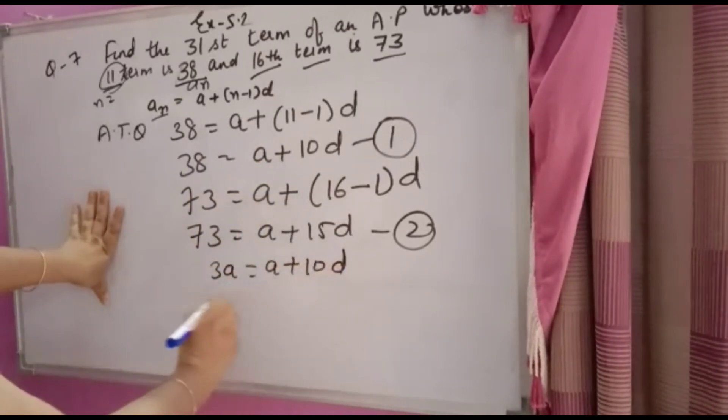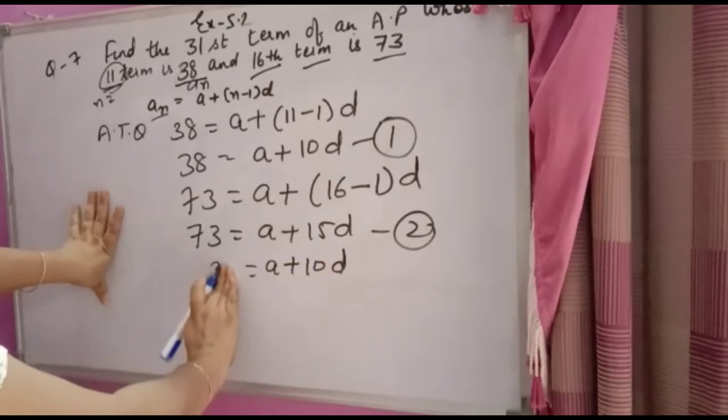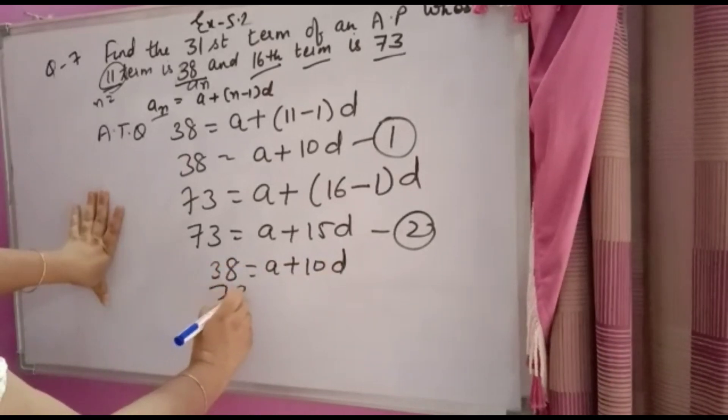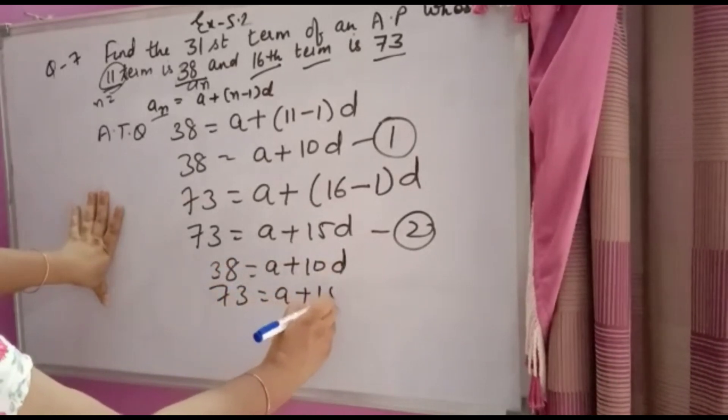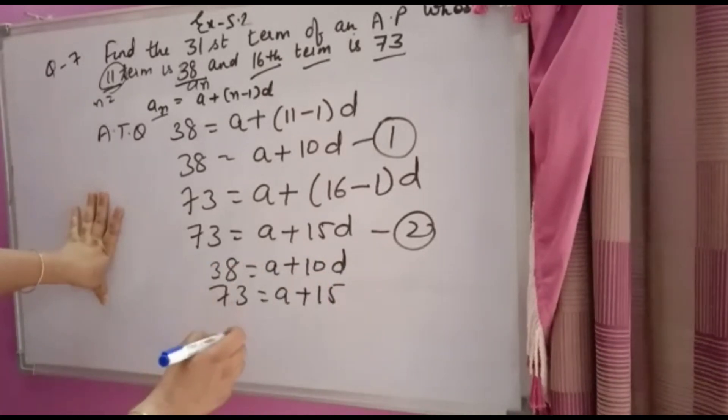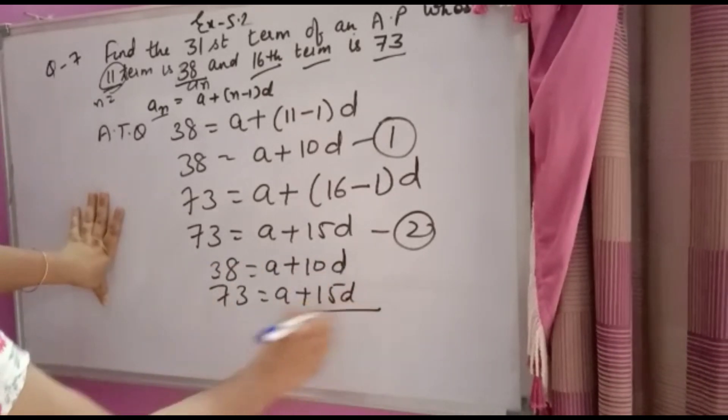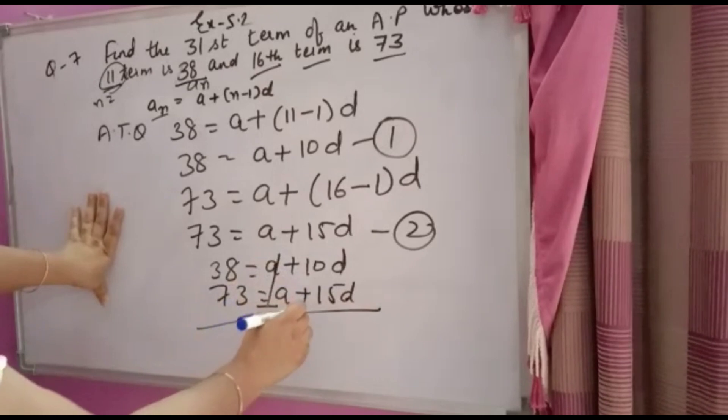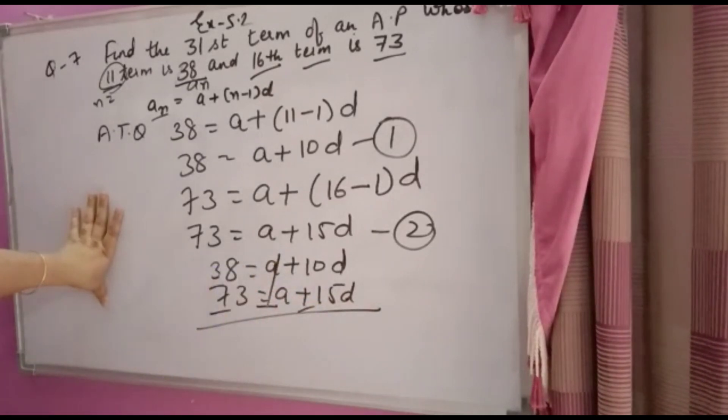You will subtract both equations. You have A + 10D = 38 and 73 = A + 15D. A minus A cancels.